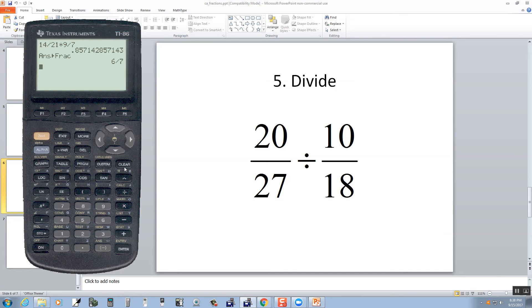Now division you have to be careful on. Typically, on any calculator, the best bet is to put parentheses around each fraction when you plug it in. So I do a beginning parentheses, 20 divided by 27. Closing parentheses divided by beginning parentheses, 10 divided by 18. And then closing parentheses.